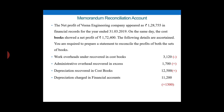Starting with profit as per cost book, that record is 1,72,400. Work overhead under-recorded in cost book means the expense is under-recovered, so the financial account profit requires adjustment. Administration overhead recorded in excess in cost accounts affects the cost profit, and the depreciation required in cost book is also an expense item to be adjusted.